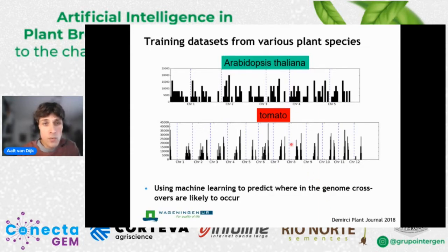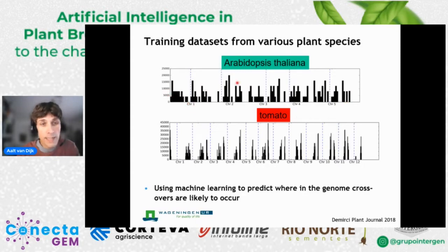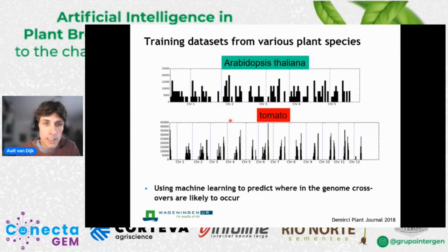We thought it could be very useful to try and use machine learning to predict crossover locations. I'm showing here two examples of training data that we had available — large-scale datasets where, based on a certain cross, people investigated the occurrence of crossovers. Here we have the different chromosomes of Arabidopsis or tomato, and the bars indicate the number of crossovers. Underlying that, we also know the exact locations of these crossovers to a certain extent. Our goal was to use machine learning to predict where in a genome these crossovers are likely to occur.